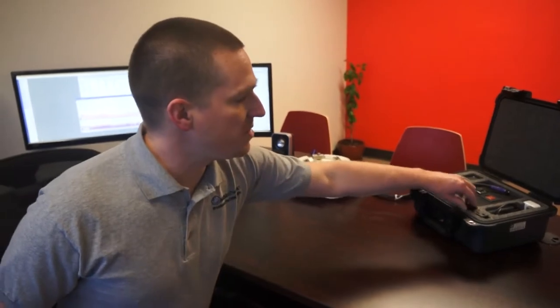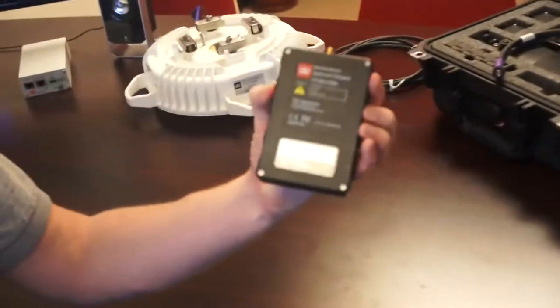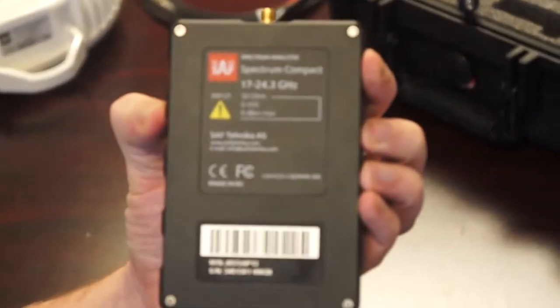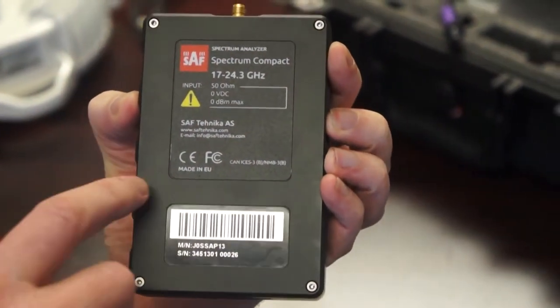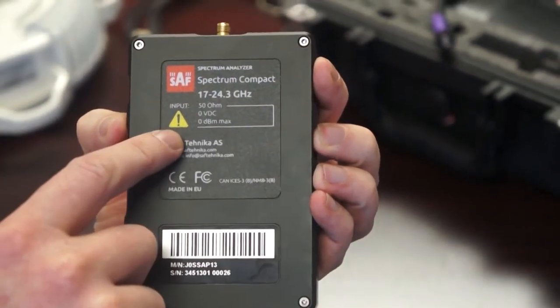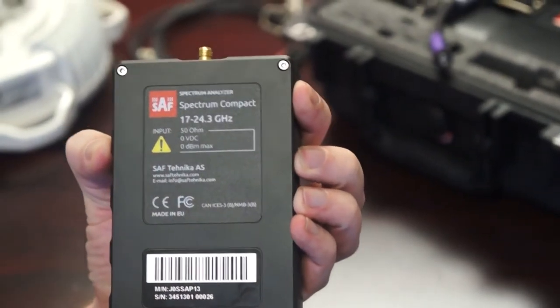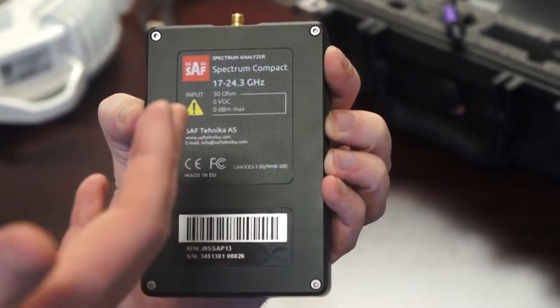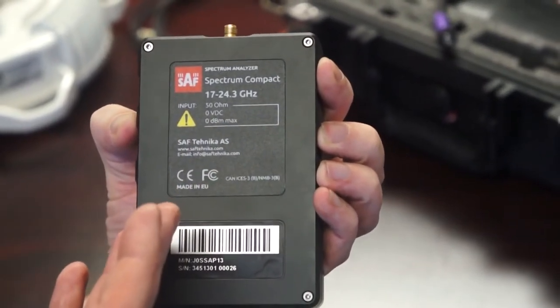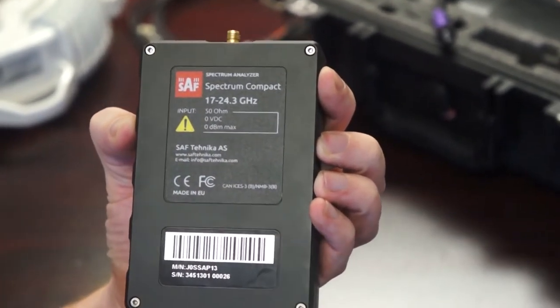The way I'm going to do that today is I'm going to use my SAF Technica Spectrum Compact. This model is between 17 gigahertz and 24.3 gigahertz. The other important thing on this label is it does have a max input of 0 dBm. Now why do I point that out? The radio is transmitting at 10 dBm, so I will damage the Spectrum Compact if I feed it a 10 dBm signal.